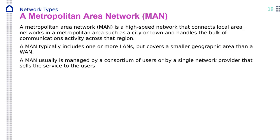The metropolitan area network (MAN) is a high-speed network that connects local area networks in a metropolitan area such as a city or town, and handles the bulk of communication activity across that region. It usually includes more than one LAN but is smaller than a WAN — it is in the middle between LAN and WAN. It is usually managed by a consortium of users or by a single network provider.